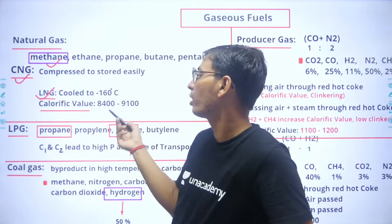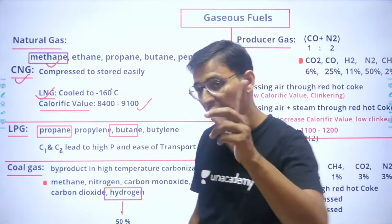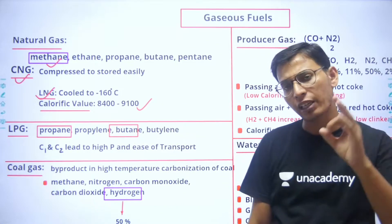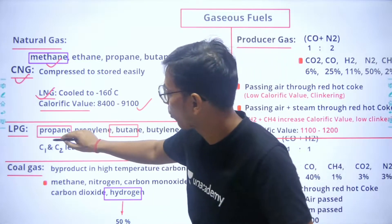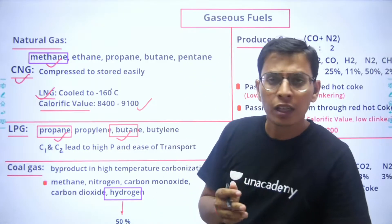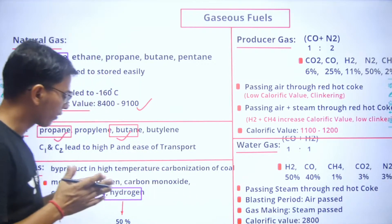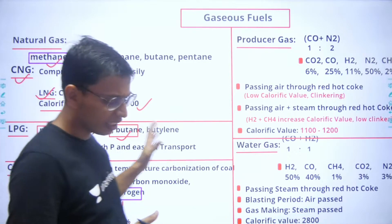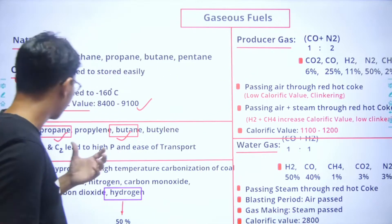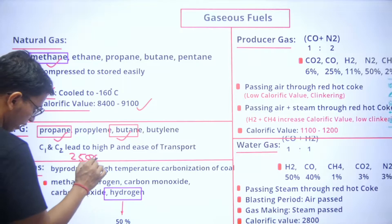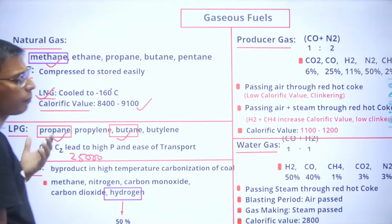The calorific value of natural gas ranges from 3400 to 9100 kcal/Nm³ — this range is very important. If you talk about LPG, liquefied petroleum gas, which is household gas, it consists of propane, propylene, butane, and butylene. The major fractions are normal propane and normal butane, as well as isopropane and isobutane. LPG is the C3 and C4 fraction, which is highly compressible and easy to transport. Its calorific value is around 24,000 to 25,000 kcal/Nm³.